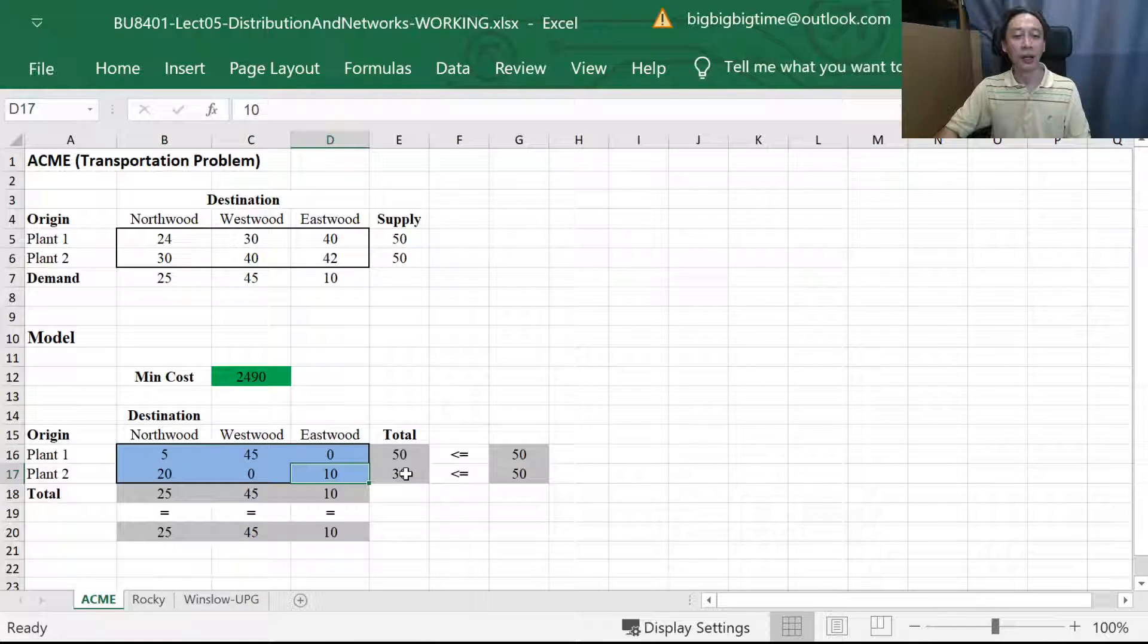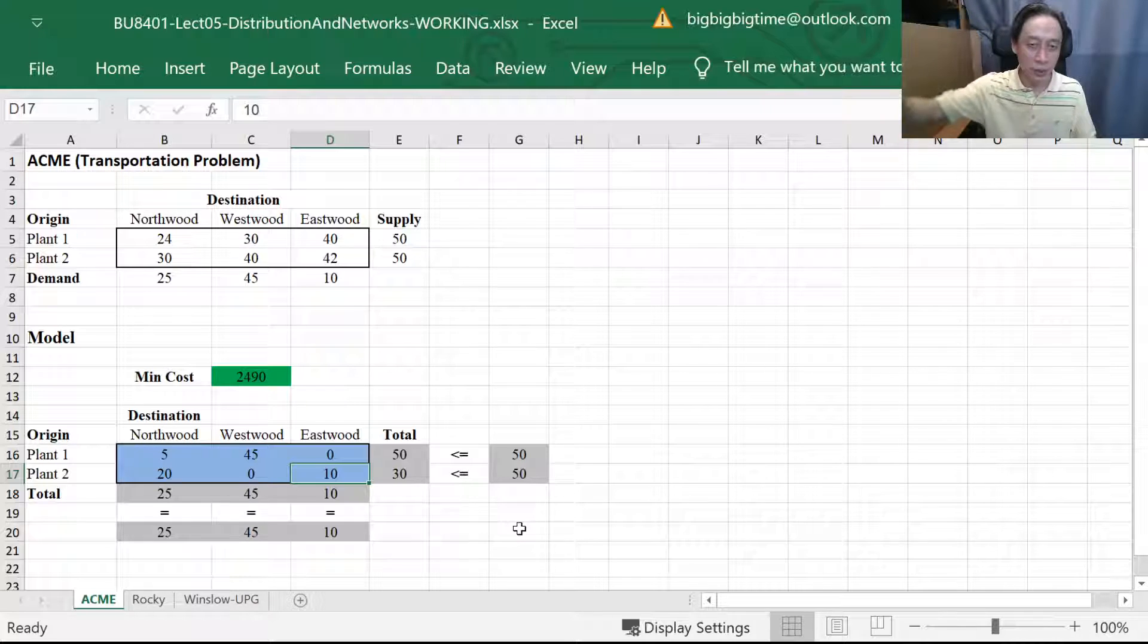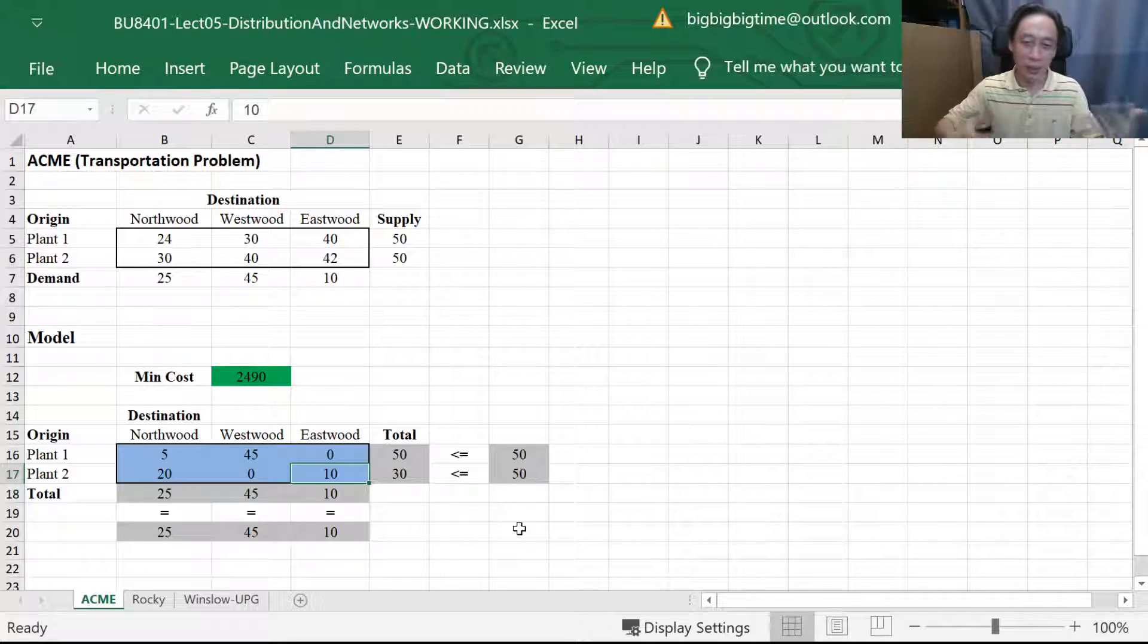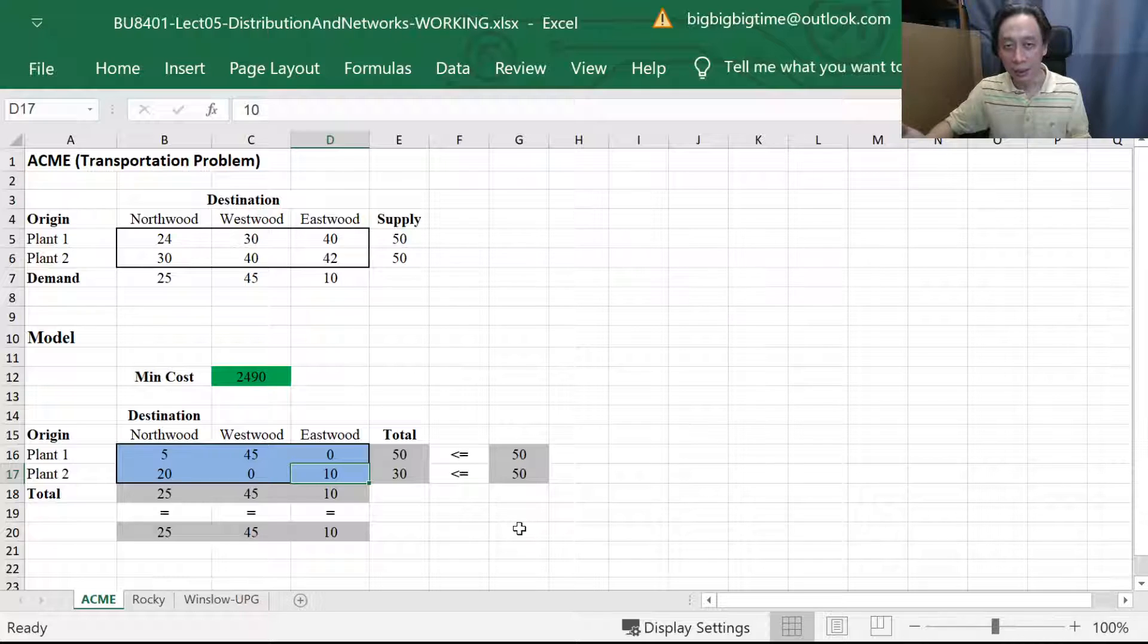And that does not mean that we can therefore take away the integer constraint. I say the word by chance is because all the numbers, coefficients, etc., they are all integer. So it ends up in such a way that it is also integer. They are kind of like nice multiples of easy factors, two, three, five, and all that. So it turns out that it's nicely done.